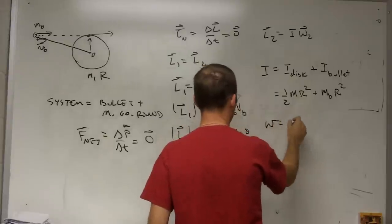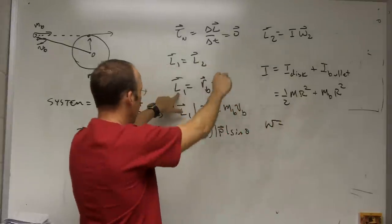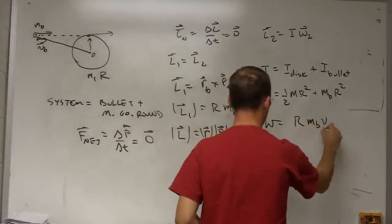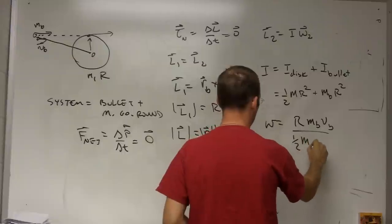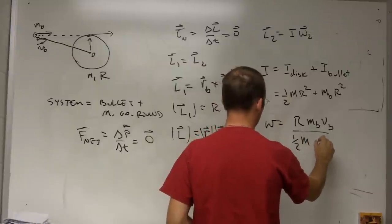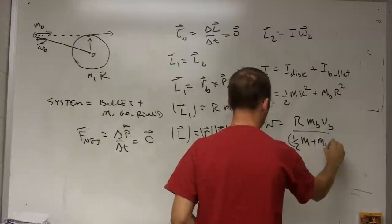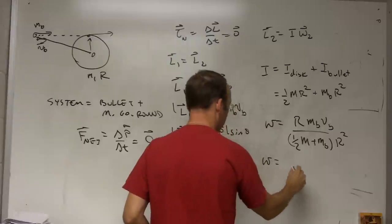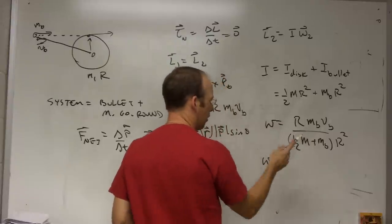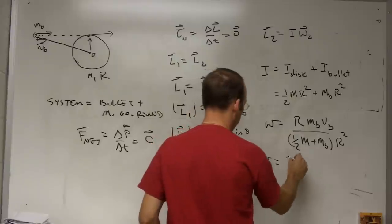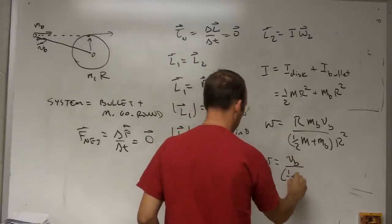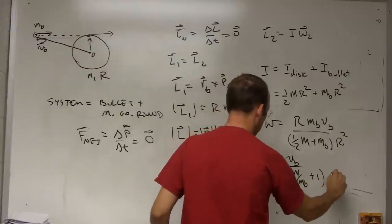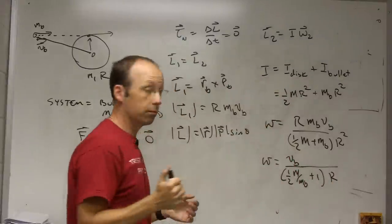So what's my magnitude of the angular velocity? The magnitude is going to be equal to L1 divided by I. So MB VB over I, one half M plus MB R squared. So let's just say omega equals, one of the R's cancels. I could do some little math magic here. I could say velocity of the bullet over one half M over MB plus one R.